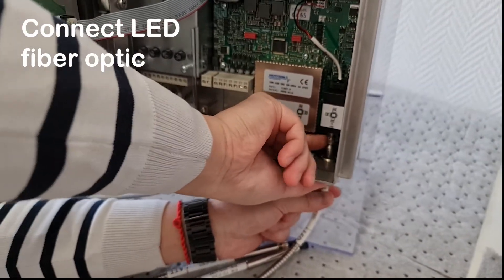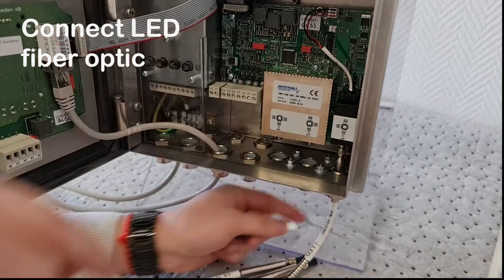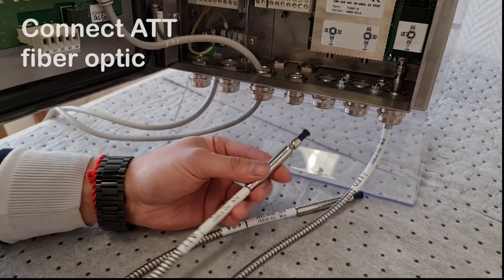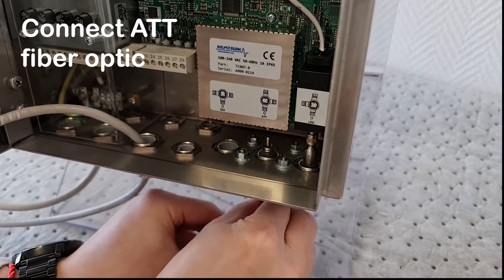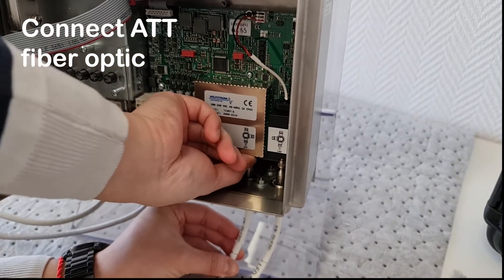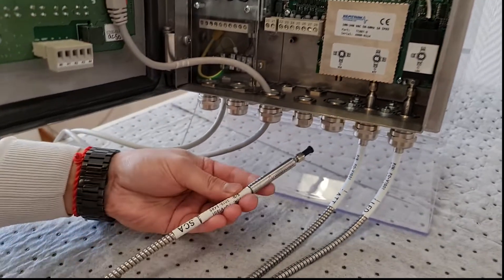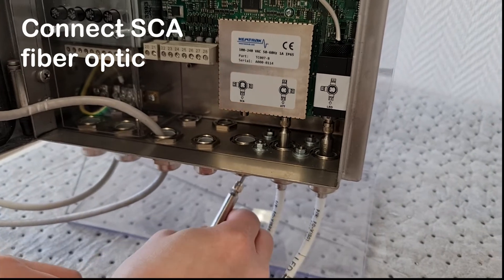The fiber optic marked LEAD is connected to the lead housing. The fiber optic marked ATT is connected to the attenuated light detector. The fiber optic marked SCA is connected to the scattered light detector.